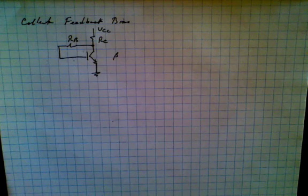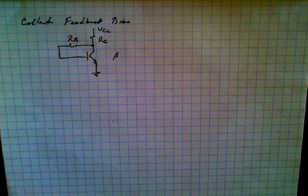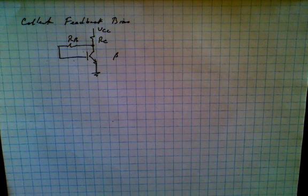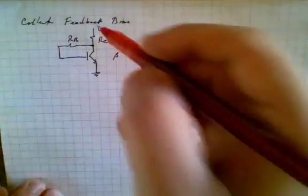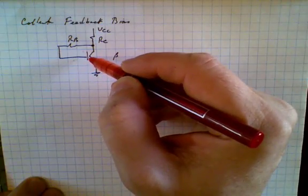One way to establish a stable quiescent point or Q point is by means of collector feedback bias. In this circuit, the resistor is taken from the collector to the base of the transistor.